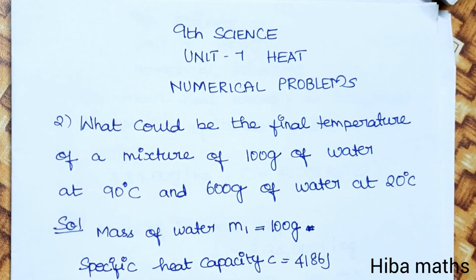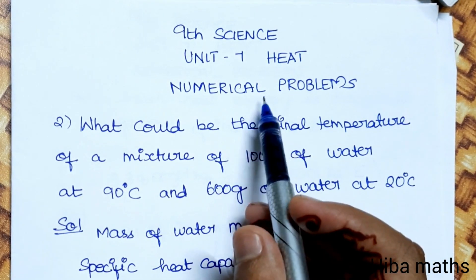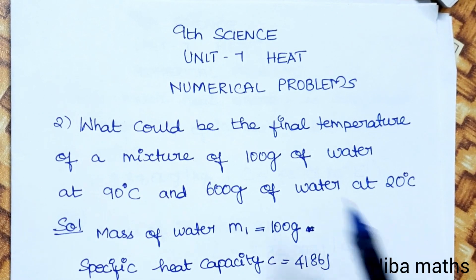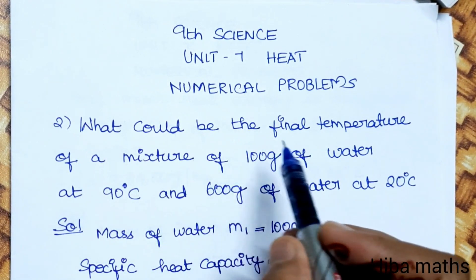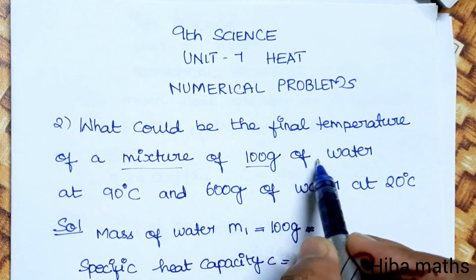Hello students, welcome to Hibamax study time. In this video, I'm covering 9th standard science unit 7 heat, numerical problems. The second question: What would be the final temperature of a mixture of 100 grams of water at 90 degrees Celsius and 600 grams of water at 20 degrees Celsius?